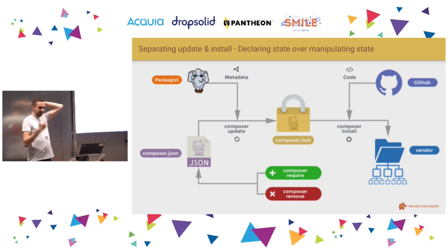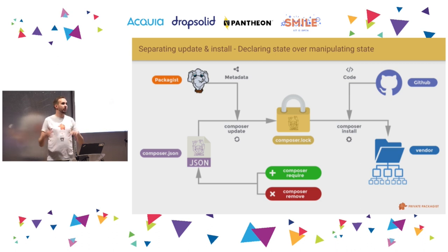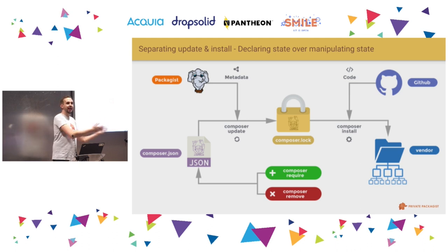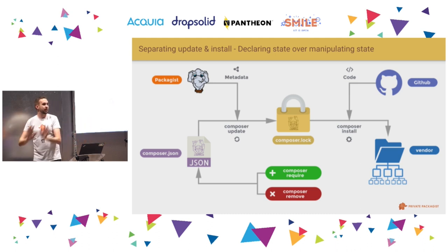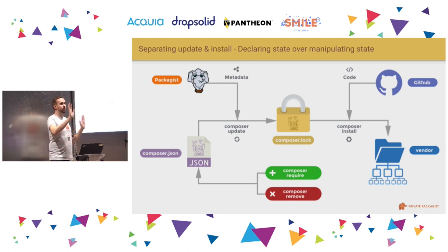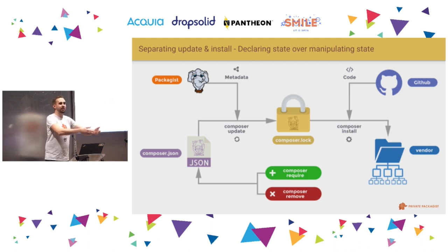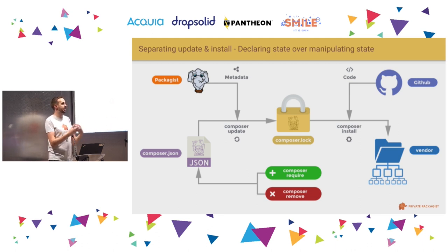The important thing here is that we're all about declaring state. It's not a package manager in the traditional sense where you install a thing and remove a thing, manipulating state over time. Instead, there's always the full definition of everything that's supposed to be present on the system in your composer.json. A Composer Update or Install just matches the state in the file it's reading from — the JSON or lock file — with the system it's writing into. An update looks at the differences between the lock file and JSON file and syncs them. An install synchronizes the lock file with your vendor directory.